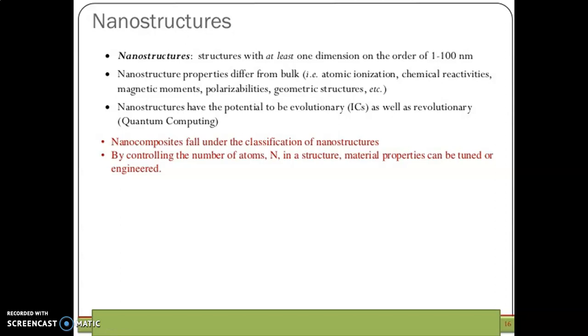Nanostructures, at least one dimension on the order of the 1 to 100 nanometers is the basic definition, basic requirement. Nanostructures' properties differ from bulk, atomic ionization, that is, atomic ionization, chemical reactiveness, magnetic moments, polarizabilities, geometric structures examples.